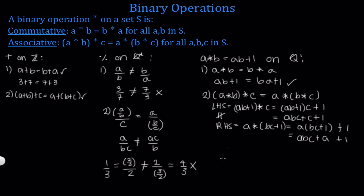We just need a counter example to show this operation is not associative — I'll leave that as an exercise for you. Most of the time, when asked to show if a binary operation is commutative or associative, it's just a matter of going back to the definitions and checking the properties. Sometimes it can be a little tedious, but for the most part it's straightforward. This sums up the video on commutative and associative properties for binary operations.